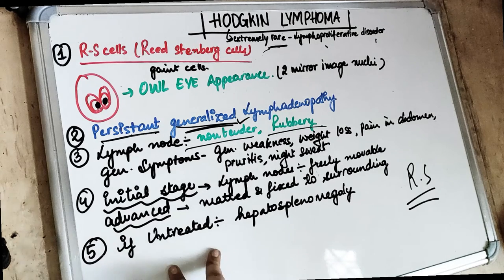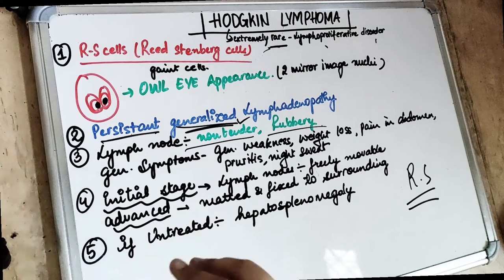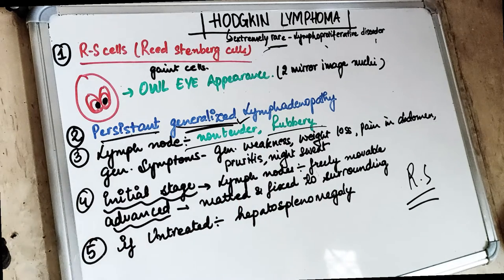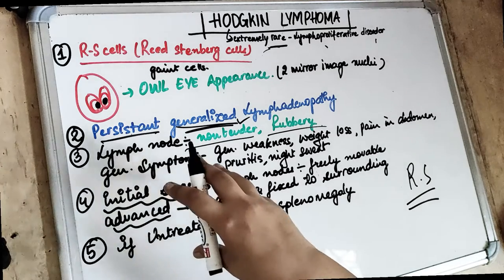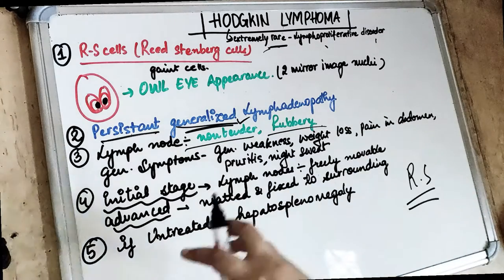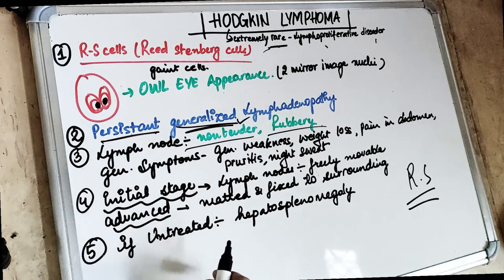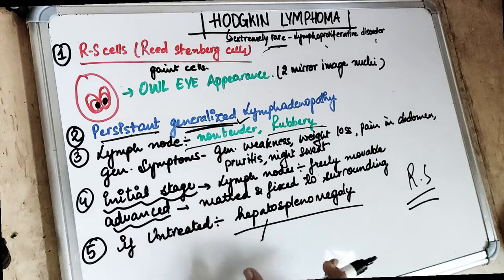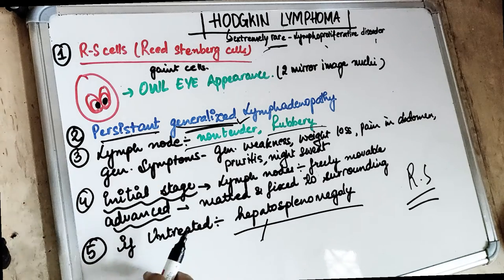If left untreated, there can be spread from one lymph node to another, and spread to vital organs such as the spleen, lungs, and bone marrow. When there is spread to the spleen and liver, it will cause hepatosplenomegaly — enlargement of both the spleen and the liver. Left untreated, it will also affect other vital organs.